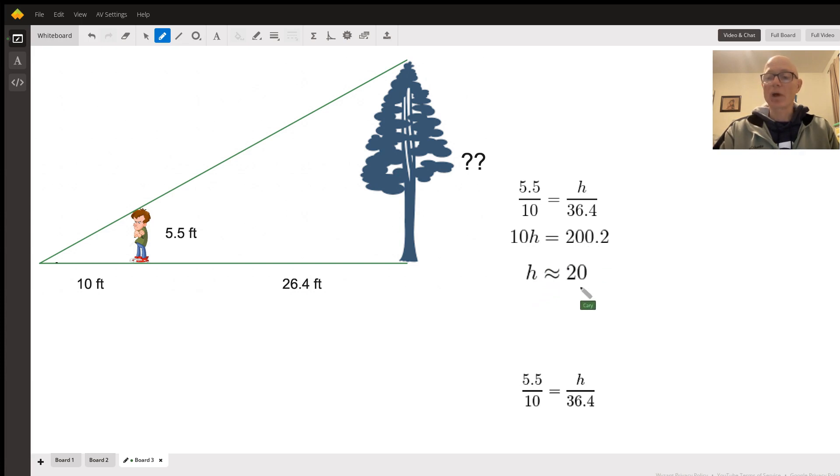200.2 divided by 10 is about 20. It's not exactly 20 because of that 0.2 over there. But it's about 20. If we were going to go to the nearest foot, we would call the height of the tree, in this case, 20 feet.